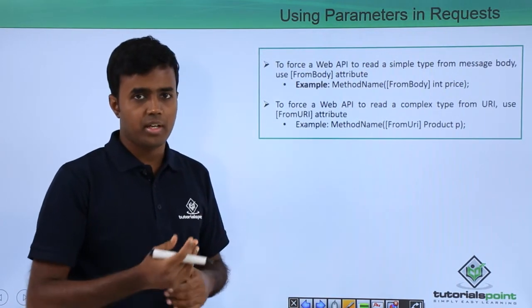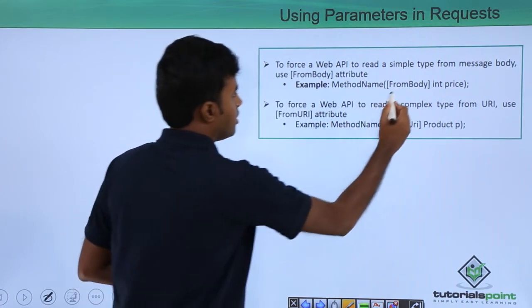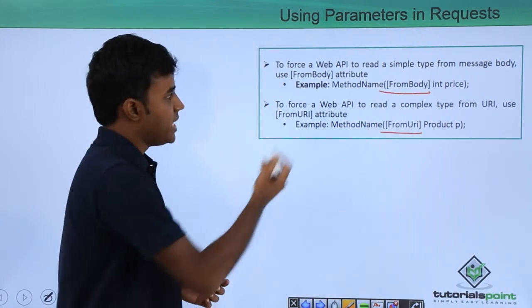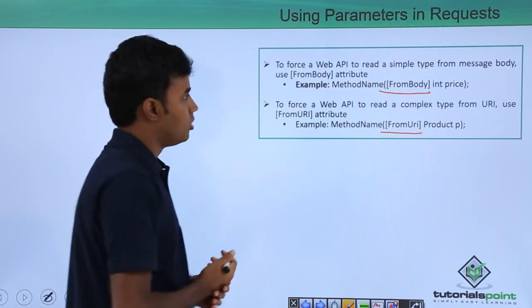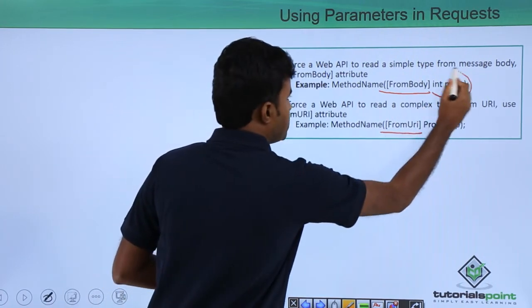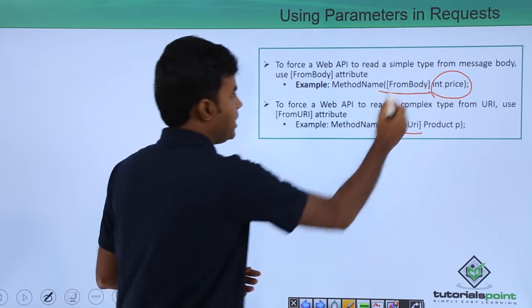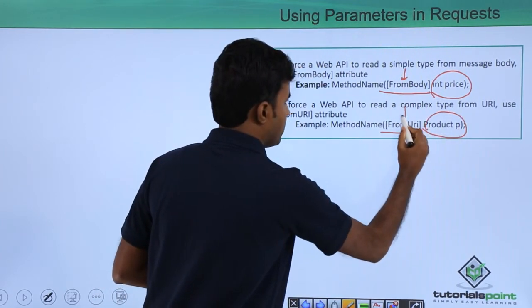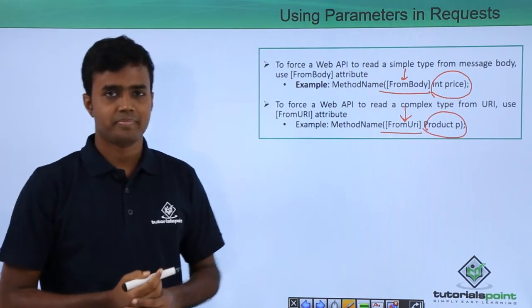To change this behavior, you can use from body or from URI, which basically forces the web API to read the integer which is a simple type from the body and the product which is a complex type from the URI. Thank you.